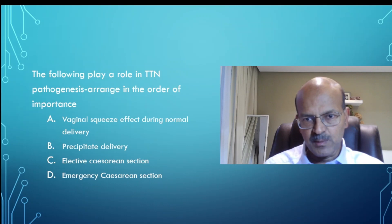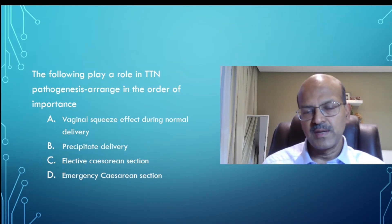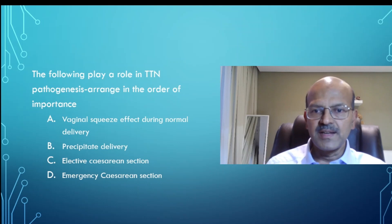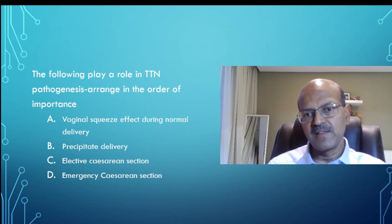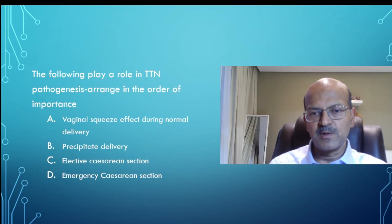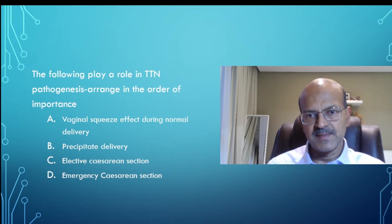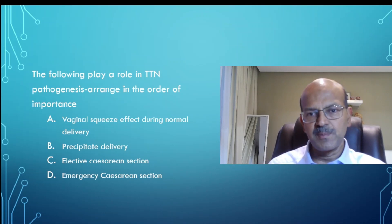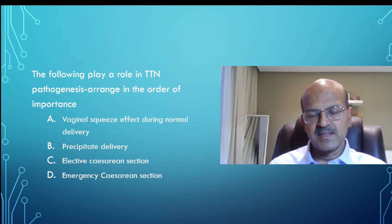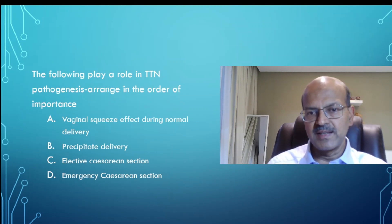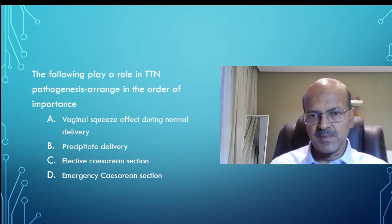In emergency cesarean section, some cases are due to antepartum hemorrhage, for example, where the labor process hasn't started and there is actually bleeding. These cases have a higher chance of respiratory distress from TTN physiology. While if the mother has been in labor and it is obstructed labor or failure to progress, you don't face TTN in these cases. In precipitate delivery also, the labor process has started but the delivery is very rapid, so the vaginal squeeze effect is limited and these babies have a higher chance. Vaginal squeeze effect during normal delivery actually contributes to reducing the risk of TTN, so that will be the lowest among the risk factors mentioned.